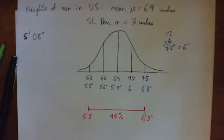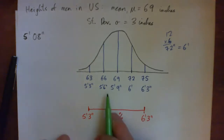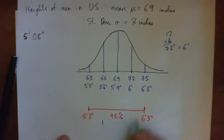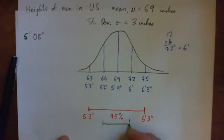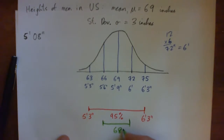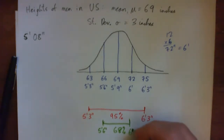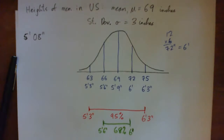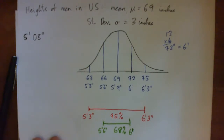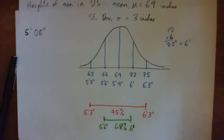That's the 95% rule. There's also a 68% rule: 68% of men have heights within one standard deviation of the mean, so 68% of men have heights between 5 foot 6 and 6 foot.